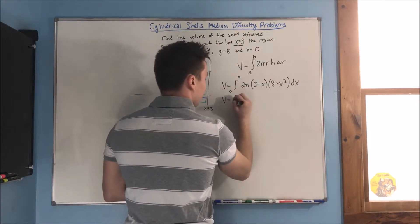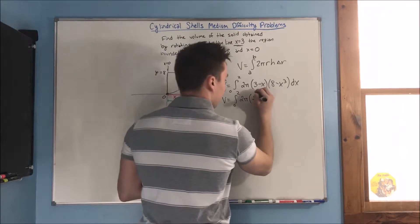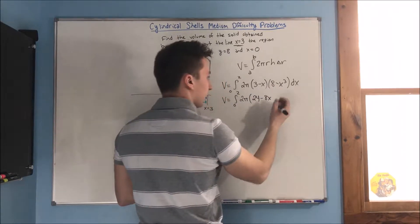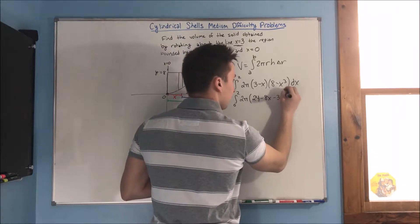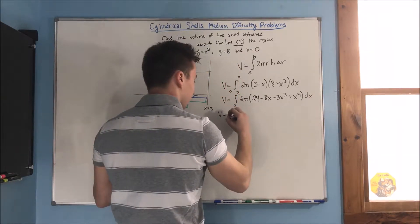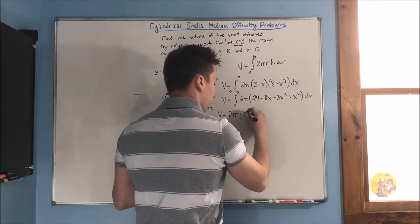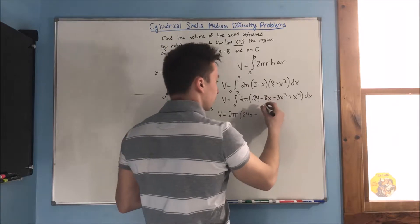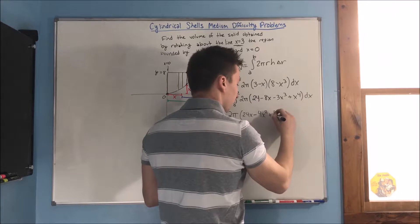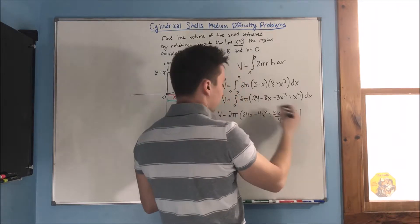Now we can expand this out. We're going to get 2π times: 3 times 8 is 24, negative x times 8 is negative 8x, we have a negative 3x cubed, and we have a plus x to the 4th, dx. This is going to be equal to volume equals 2π. Now we can integrate — this is going to give us 24x minus 4x squared, minus 3x to the 4th over 4, plus x to the 5th over 5, evaluated from 0 to 2.